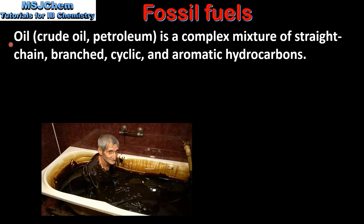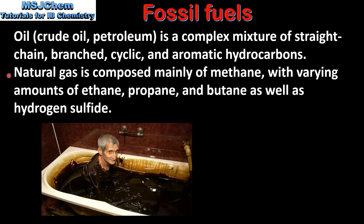Oil, which is also known as crude oil or petroleum, is a complex mixture of straight chain, branched, cyclic and aromatic hydrocarbons. Natural gas is composed mainly of methane with varying amounts of ethane, propane and butane, as well as hydrogen sulfide.